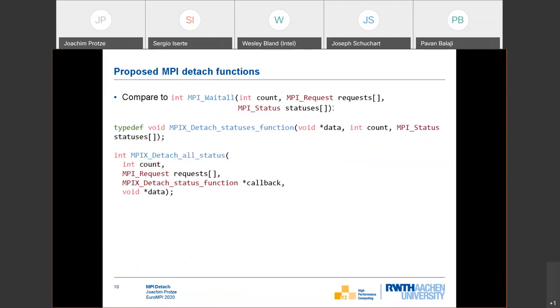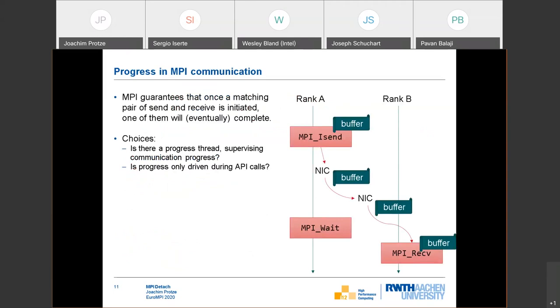We also have MPI wait all, and we have an equivalent here where we say only when all of the requests are completed, then we want to get this callback. Of course we also have a variant for passing MPI statuses ignore where we are not interested in the status argument. And when you look into the paper or internal implementation, there's also a variant where we say detached many, that's similar to the MPI wait some, wait any, where the MPI implementation has the potential to optimize the finishing of multiple MPI requests.